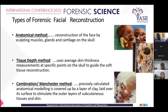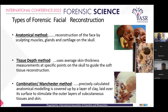Now the methods. The first one is the anatomical method. In the anatomical method, the reconstruction of the face is sculpted by building up the muscles, glands, cartilage, and fitting the skin on the skull. It is also known as the Russian method and the method generally attributes to the renowned Russian anthropologist Gerasimov. The next one is the tissue depth method. It uses average tissue thickness measurements and tissue depth markers at specific points on the skull to guide the soft tissue reconstruction. The modern version is now known as the American method and is most commonly used by forensic artists working in a law enforcement environment. The method was developed by Krogman.